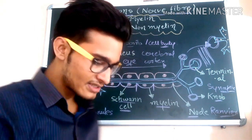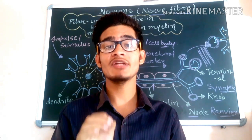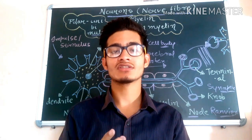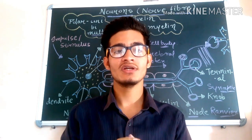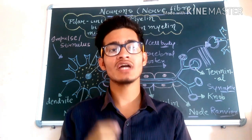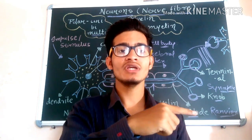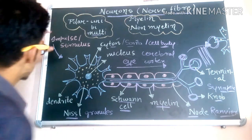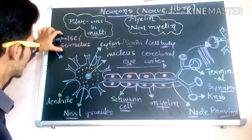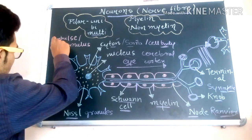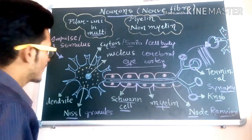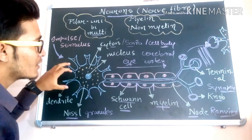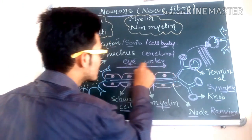We discussed earlier that neurons have different kinds of properties such as excitability and conductivity. How does it get excited? Whenever some kind of stimulus or information strikes a particular neuron, some kind of impulse is generated and those impulses are transferred from one point to another. Let's look at how the impulse strikes a particular neuron — this is the kind of stimulus which is striking a particular nerve fiber.